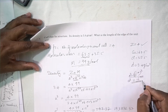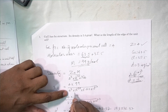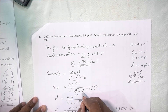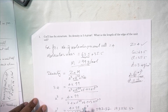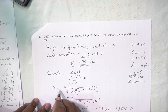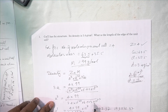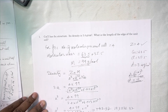A cubed into 10 to the power minus 30 is placed in the denominator, along with 6.023 into 10 to the power 23, which is Avogadro's number. Rearranging the formula, A cubed is equal to 4 into 99 divided by 3.4, into 10 to the power minus 30, into 6.023 into 10 to the power 23. Calculating: 4 into 99 into 10 to the power 7, divided by 3.4 into 6.023.